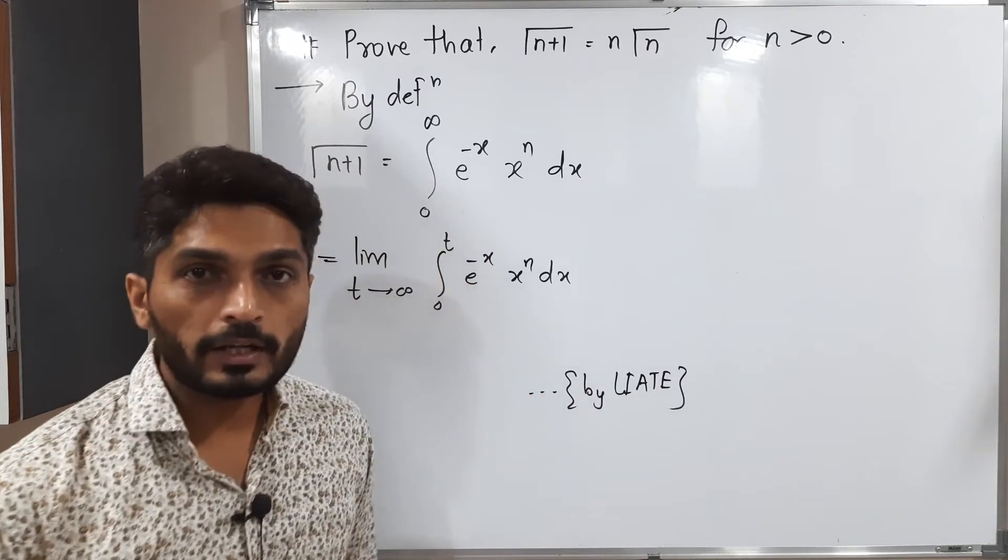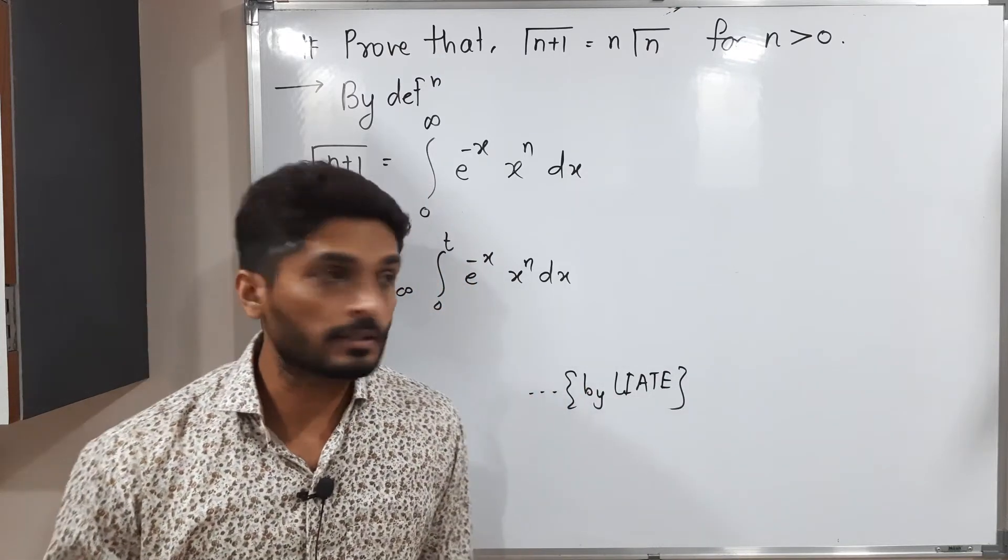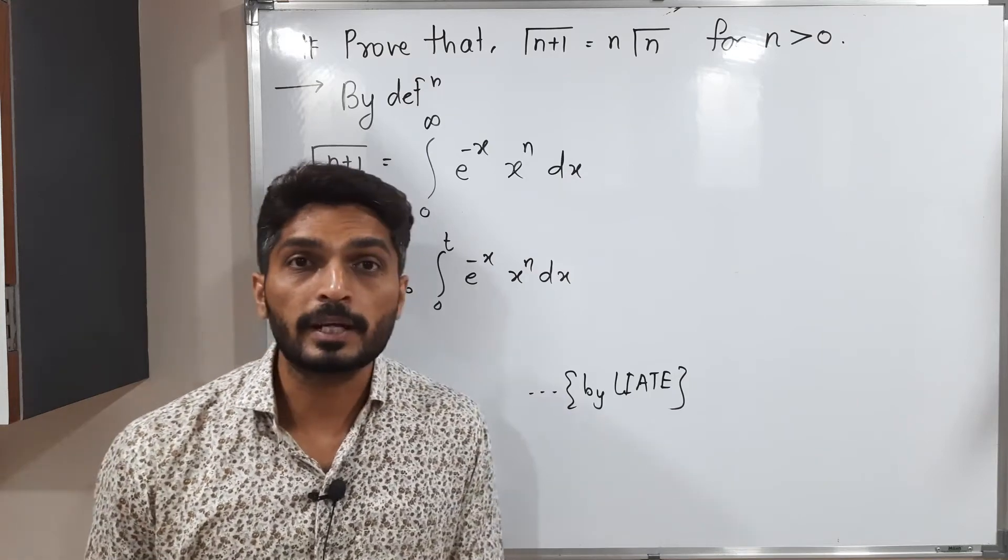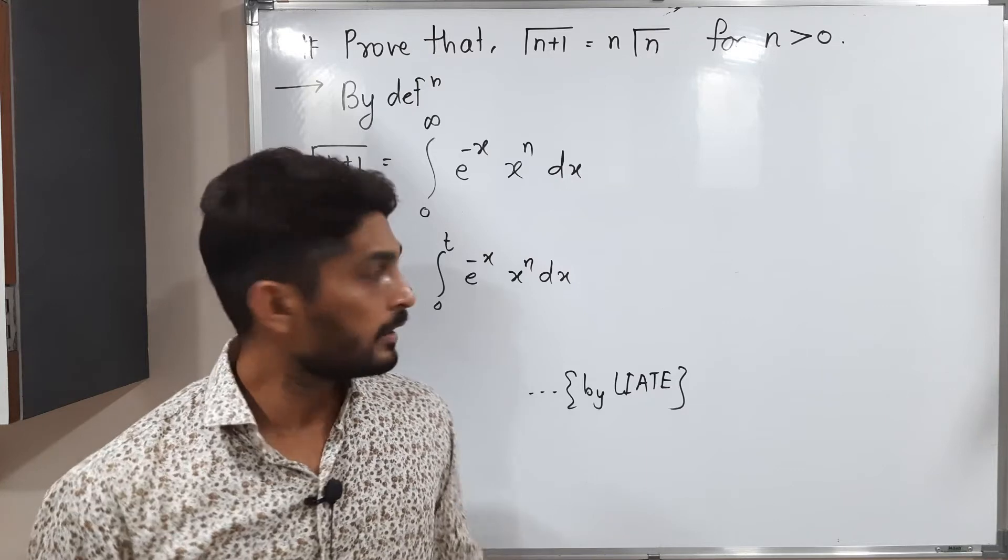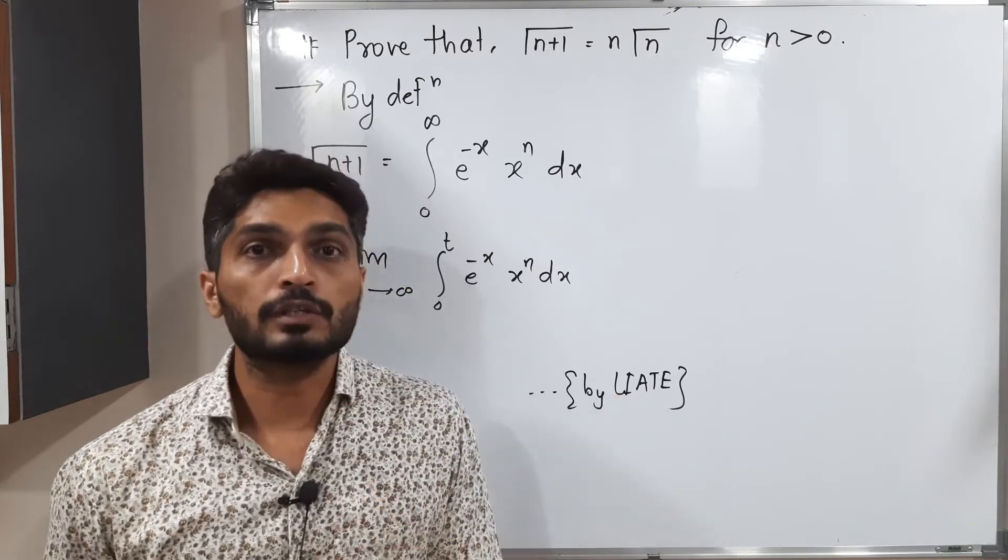L stands for logarithmic, I stands for inverse trigonometric, A stands for algebraic, T stands for trigonometric, and E stands for exponential. According to this we will arrange our function.